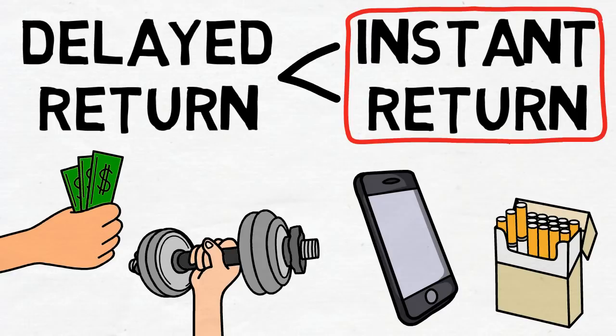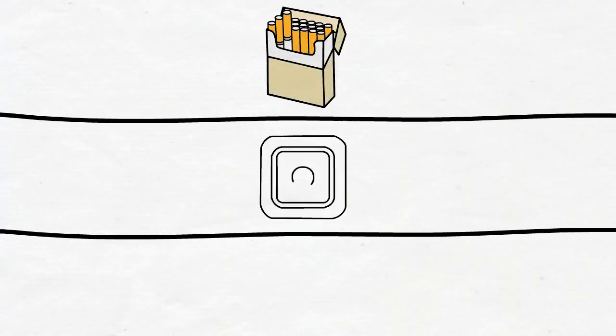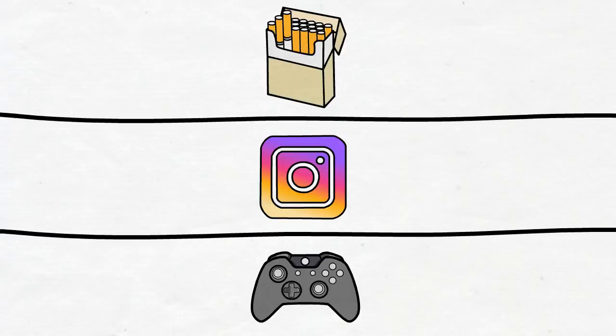Now while our bad habits might seem destructive, they are not meant to be. We perform those bad habits because we get a craving for them. And we all have these cravings, each one of us does. However, our brain didn't evolve with a specific desire to smoke cigarettes, to check Instagram, or to play video games. Those cravings are just a manifestation of an underlying motive.